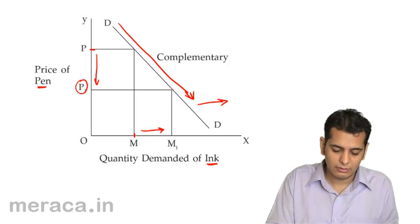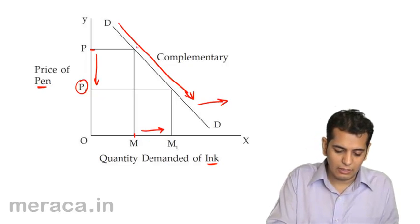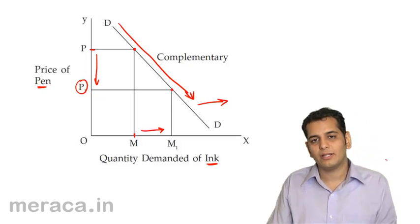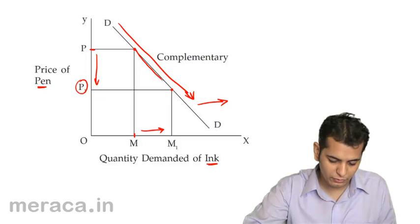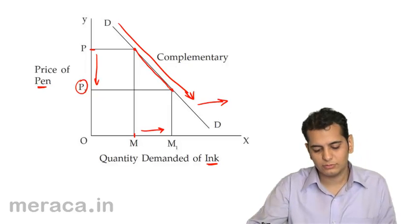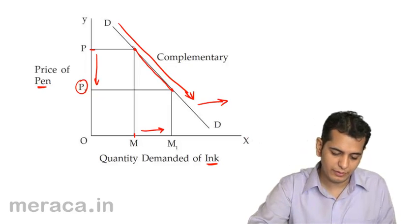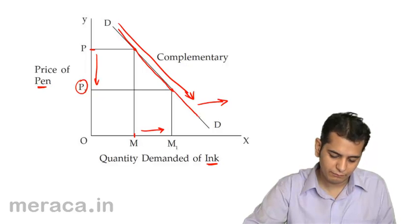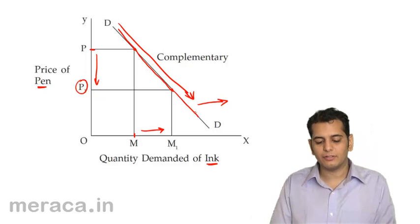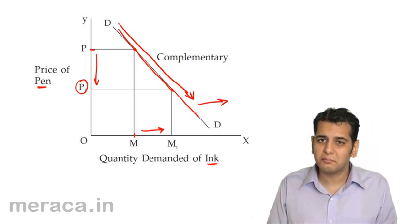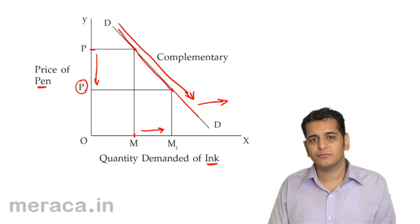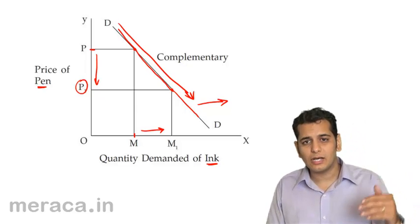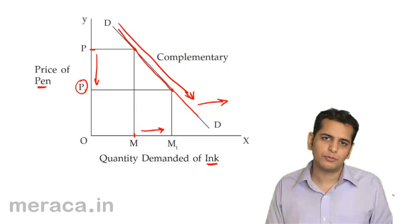Earlier we were at one point, and now we are at another. Joining the two dots and extrapolating gives us the demand curve. The demand curve in this case is downward sloping from left to right, because there is an inverse relation between the price of the complement and the quantity demanded of the good being considered.